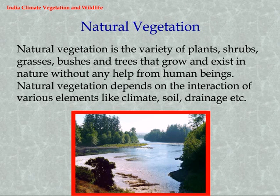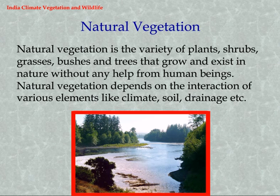Natural Vegetation: Natural vegetation is the variety of plants, shrubs, grasses, bushes and trees that grow and exist in nature without any help from human beings. Natural vegetation depends on the interaction of various elements like climate, soil, drainage, etc.